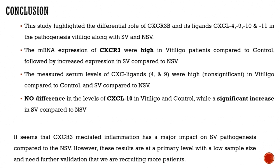In conclusion, this study highlights the differential role of CXCR3B and its ligands in the pathogenesis of vitiligo, including between segmental and non-segmental subtypes. CXCR3B mRNA expression is high in vitiligo patients compared to controls, with further increased expression in segmental versus non-segmental vitiligo. Serum levels of CXCL4 and CXCL9 were high overall but did not differ significantly between groups. CXCL10 and CXCL11 were significantly elevated in segmental vitiligo. As this is a preliminary study with few patients, we are still recruiting and expect more confident results with further work. Thank you.